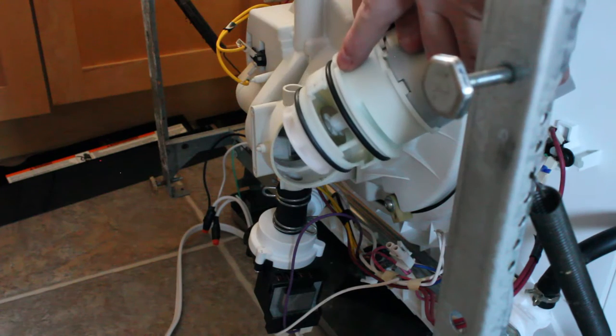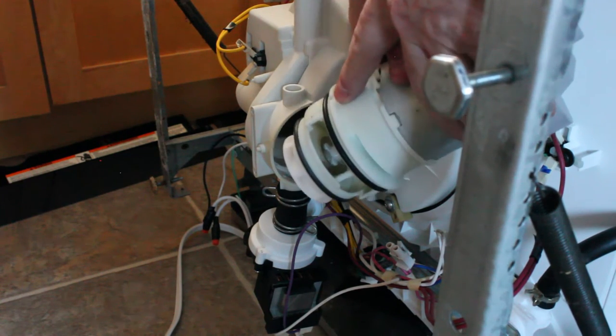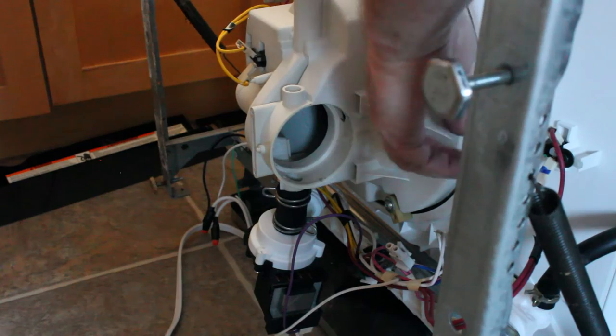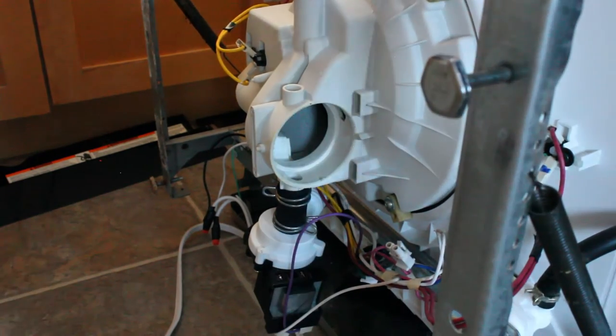The pump comes with a small gap or keyway that's meant to mate up with a tab on the washer tub itself. So there's only one way to put this pump in, but make sure that gap and tab line up before you start pushing it in.